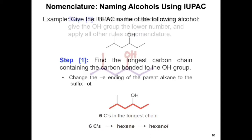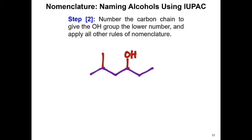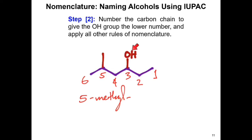The second step is to number the carbon chain to give the hydroxy group the lowest number, then apply all other rules of nomenclature. We label from right to left: 1 through 6. There's a methyl group on the fifth carbon, so this is 5-methyl. The hydroxy group is on the third carbon, giving us 5-methylhexan-3-ol.